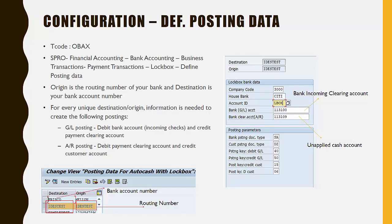The transaction code to configure the posting data is OBAX. Here we define the bank account number and the routing number. The bank account number is entered in the destination field, while the routing number is entered in the origin field.